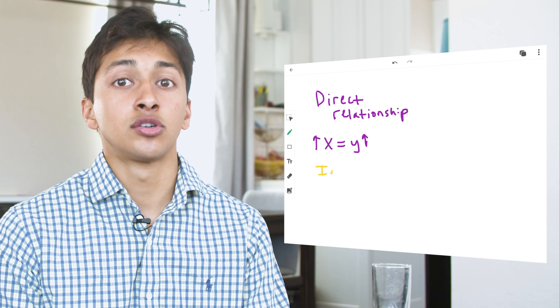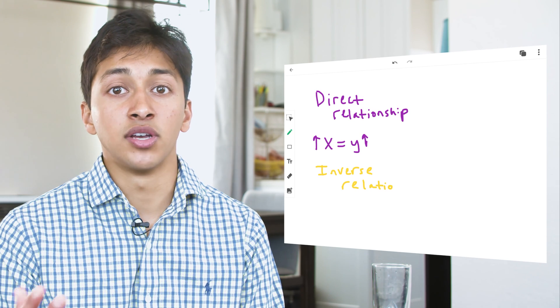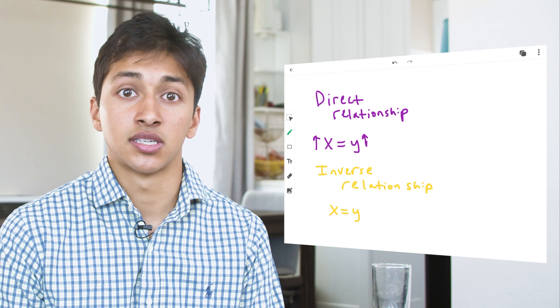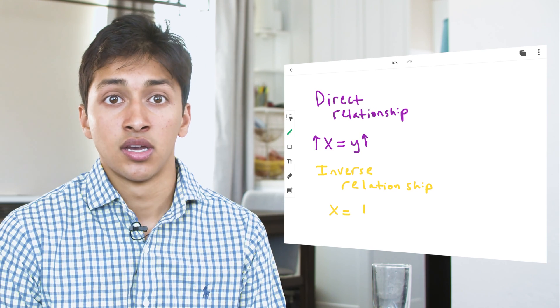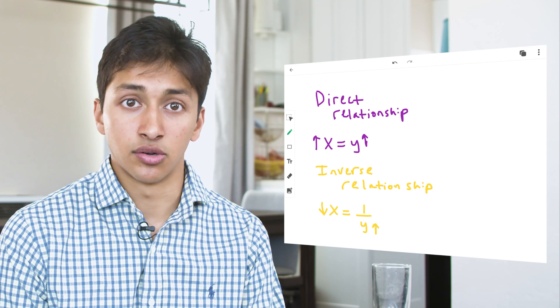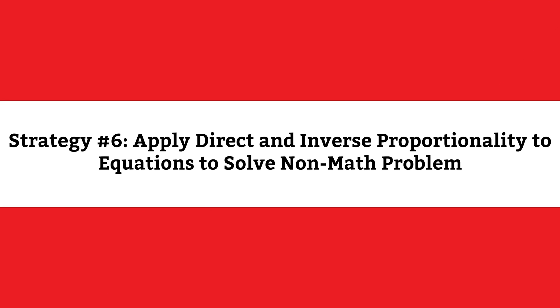When y increases, so must x. An inverse relationship means that if one variable increases, the other must decrease. You might draw it like this, x is equal to 1 over y. When y increases, x decreases. So here's MCAT physics takeaway number 6. Be able to apply direct and inverse proportionality to equations in order to solve non-math problems.